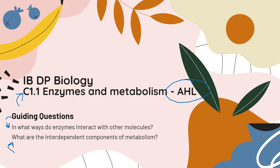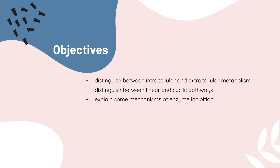In our last lecture, we talked a lot about enzyme-substrate interactions. Today, we're going to talk about some more of those interactions and also about how living things manipulate the components of metabolism in order to regulate it. Our objectives: we're going to distinguish between intracellular and extracellular metabolism, distinguish between linear and cyclic pathways of metabolism, and explain some of the mechanisms of enzyme inhibition.